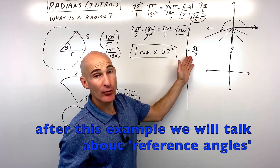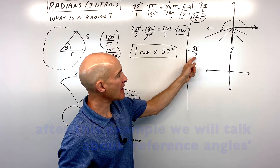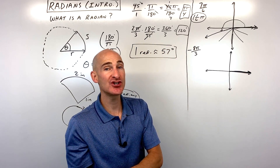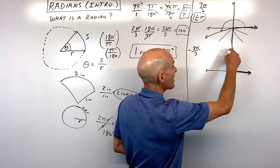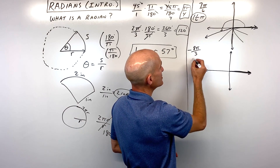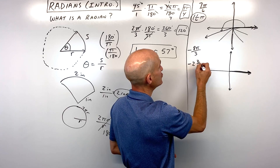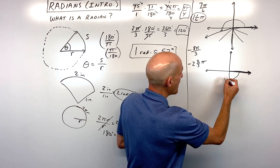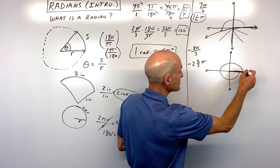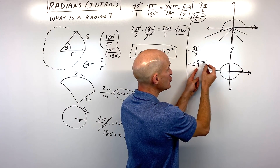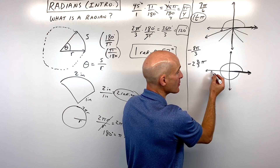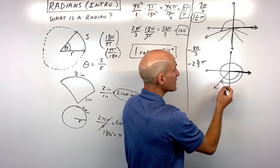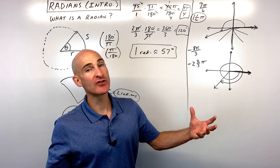Now let's look at a negative angle: negative 8 pi over 3. You still start along the positive x-axis — that's your initial ray — but now we go clockwise. Converting to a mixed number: 3 goes into 8 twice with 2 left over, giving us negative 2 and 2/3 pi. Negative 1 pi is a half revolution, and 2 pi is a full revolution. Now we go an additional 2/3 pi, which lands approximately right there. That's our rotation in radians.